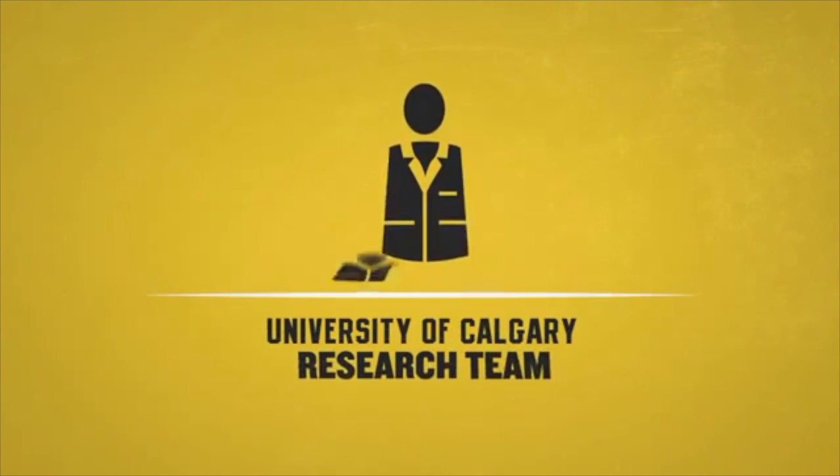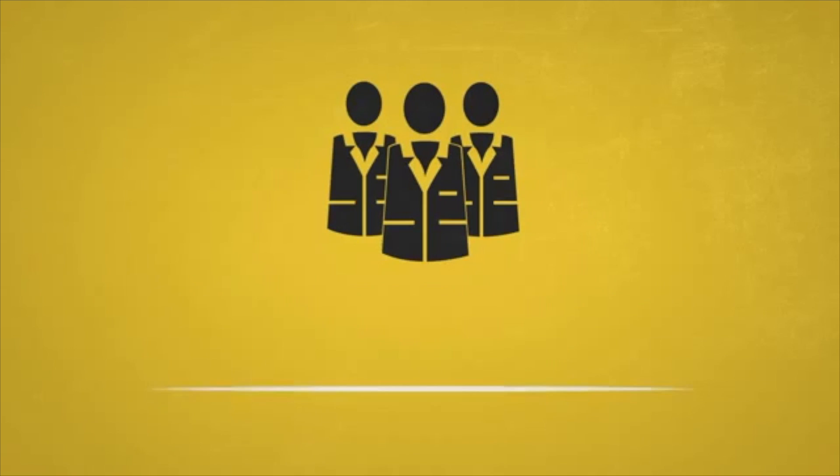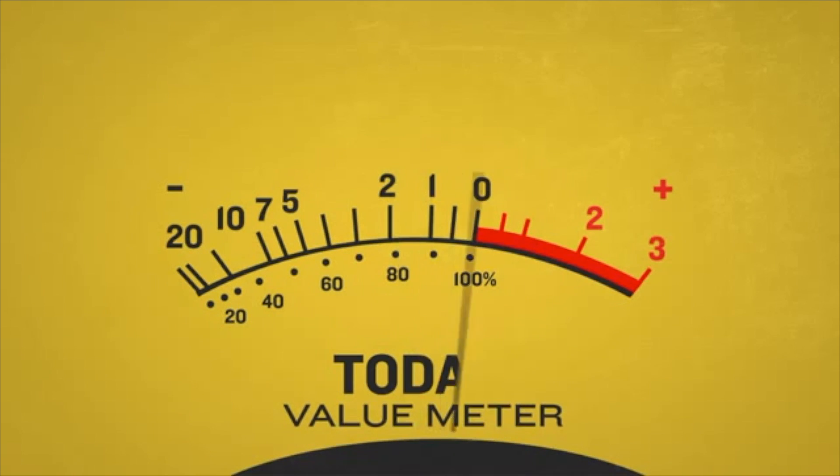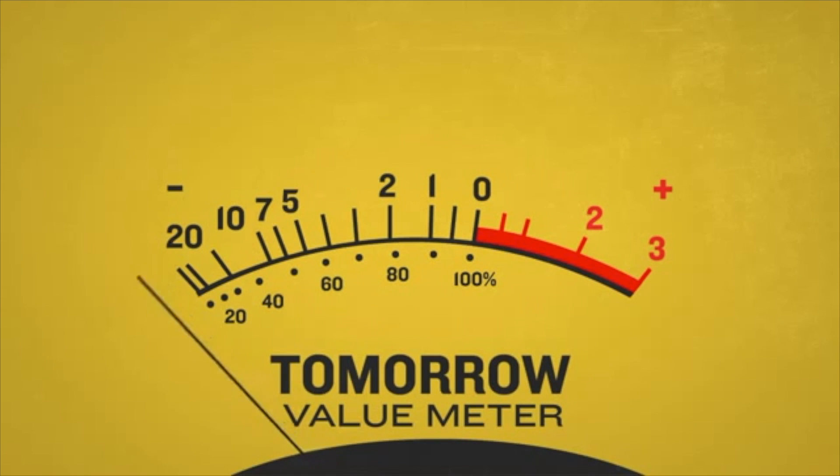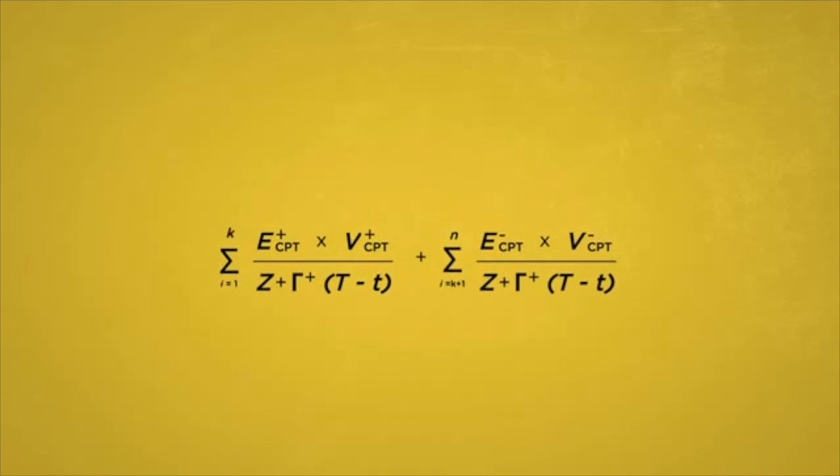So what keeps procrastinators from getting things done? A research team at the University of Calgary claims that the basis for procrastination is founded upon the human's natural tendency to value today much more than tomorrow. They conducted many studies and boiled down their results into a formula called the Temporal Motivation Theory.